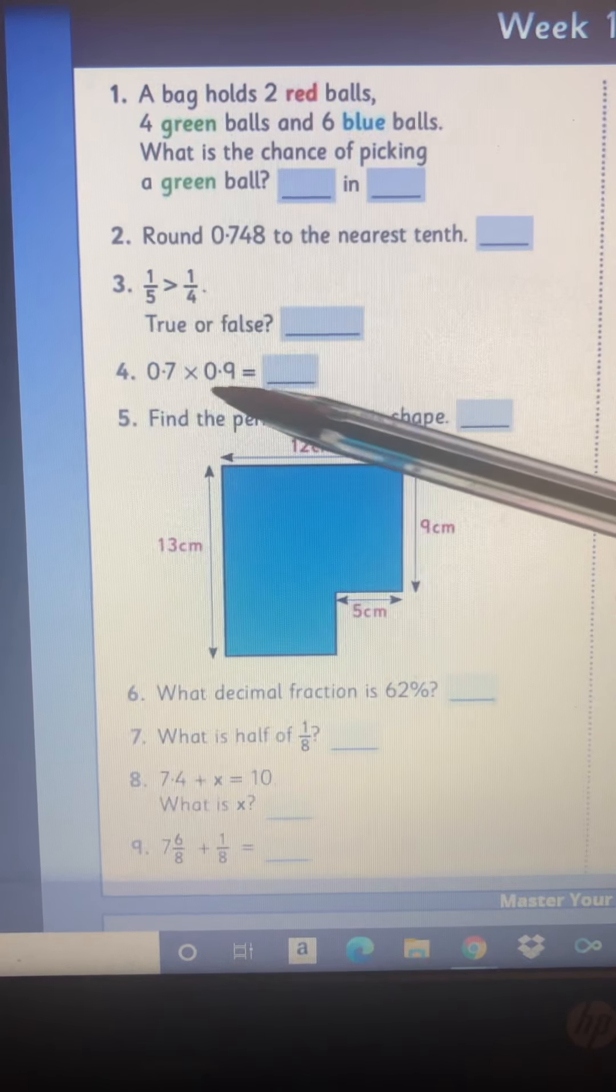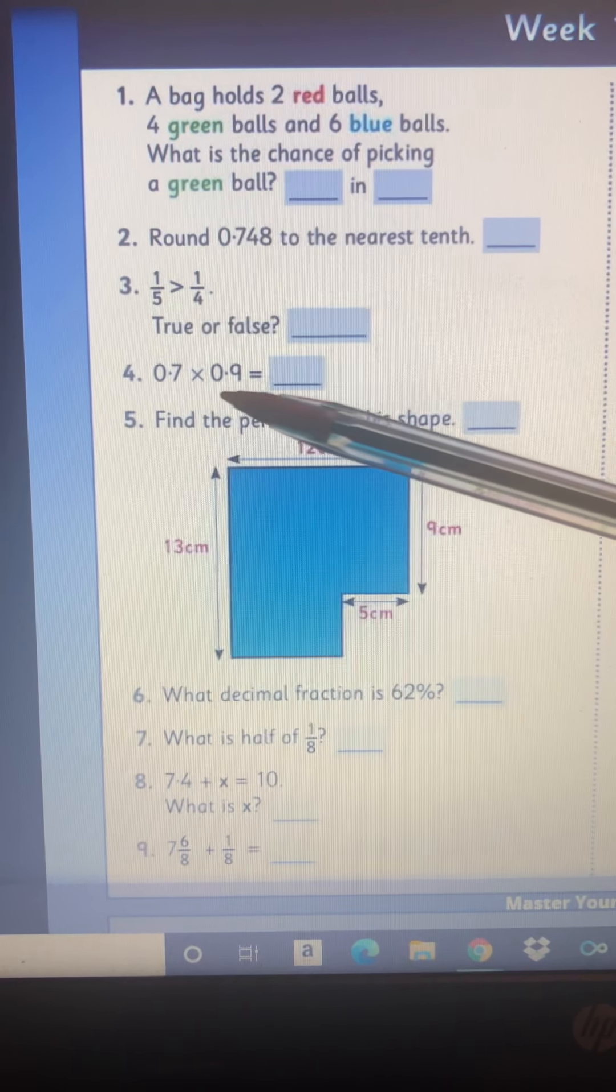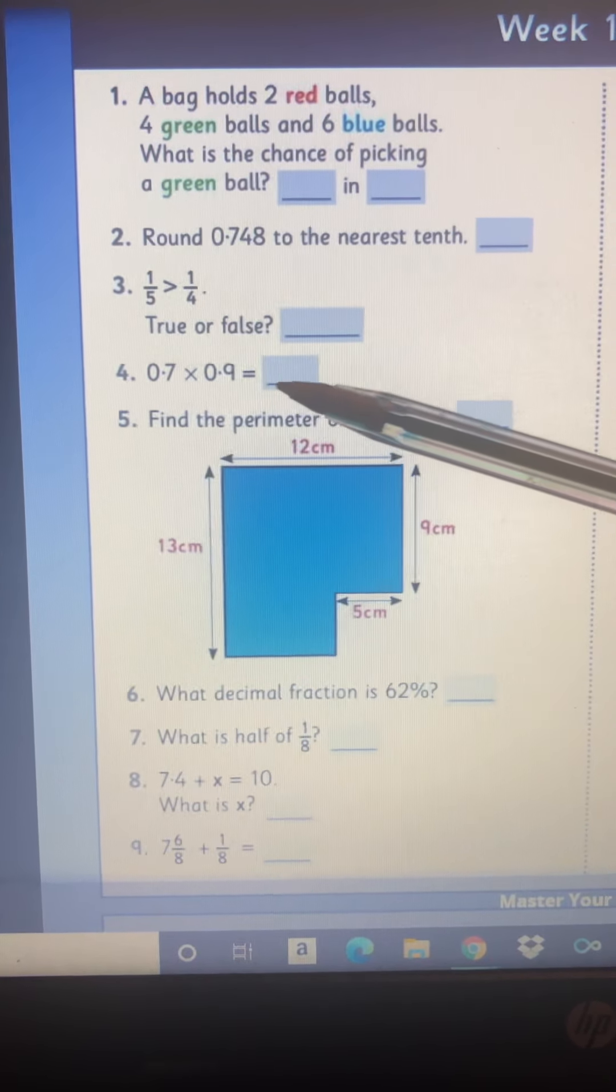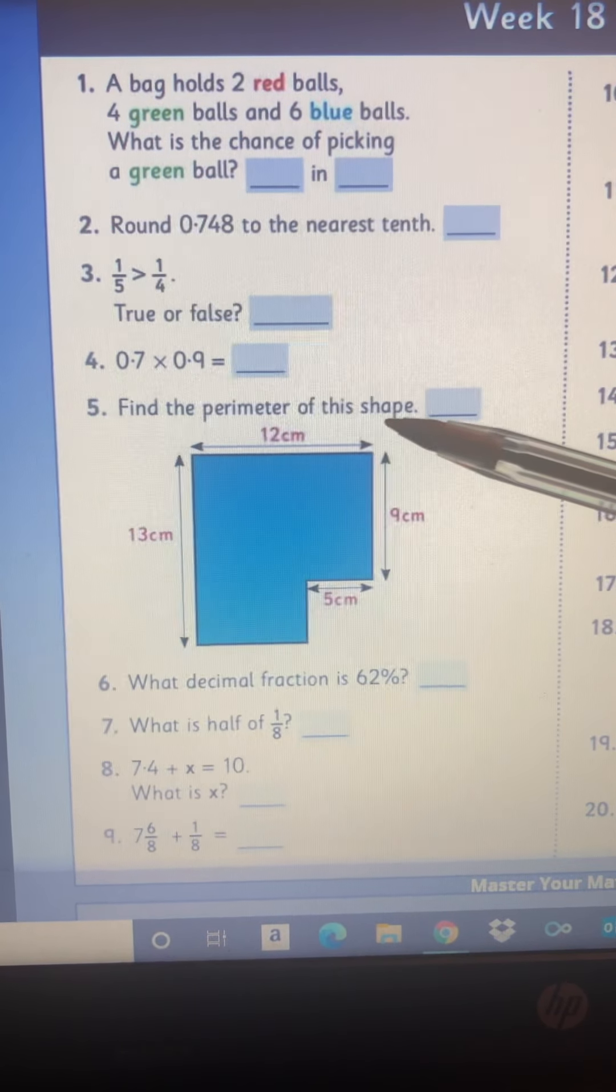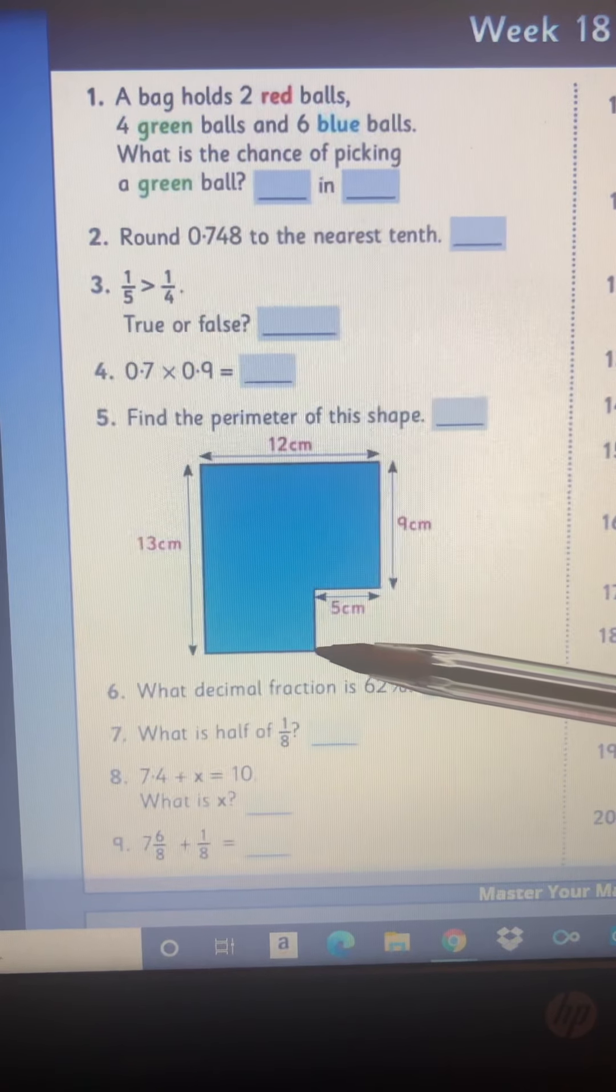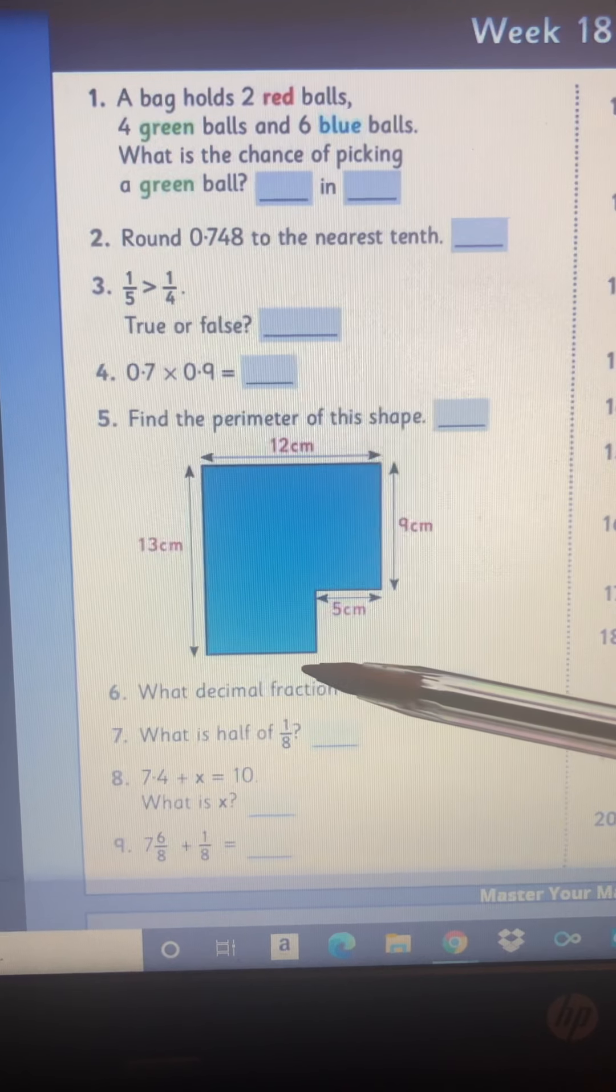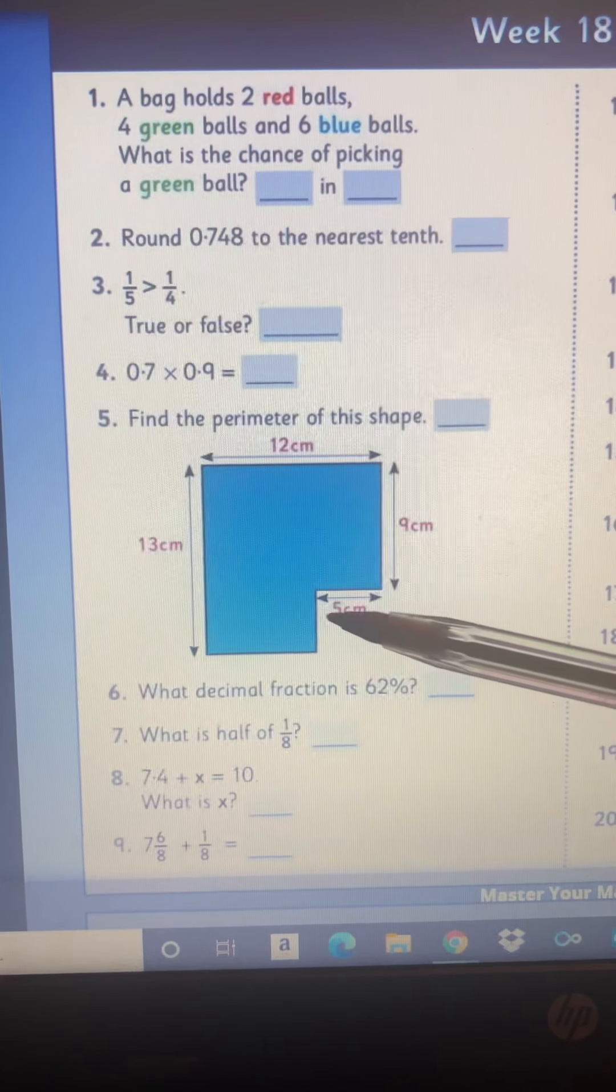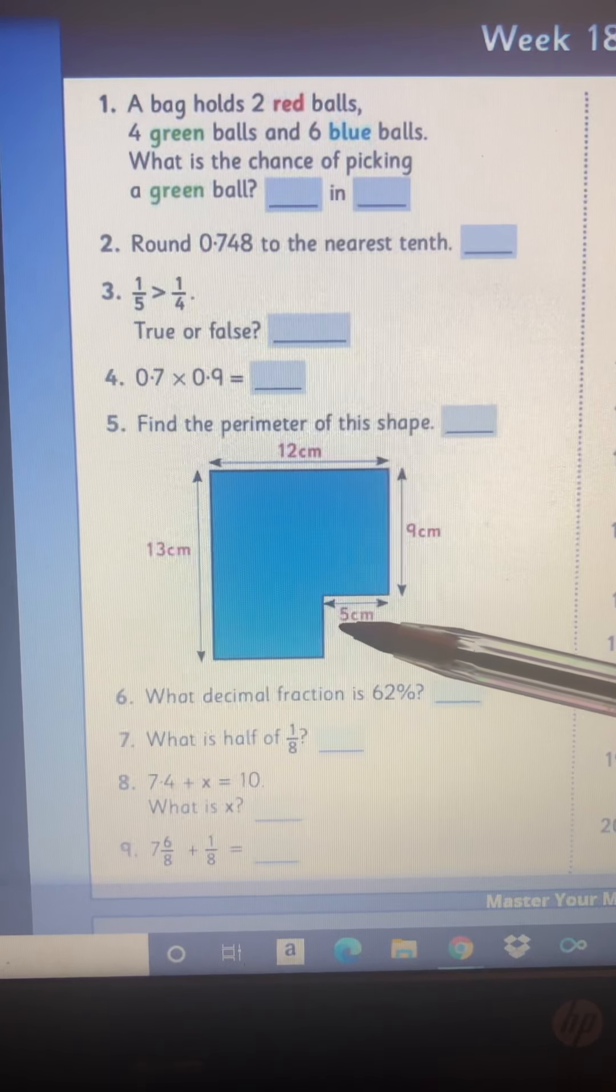Number four, same as yesterday again, 0.7 multiplied by 0.9. Just make sure you've two decimal places in your answer. Number five, find the perimeter of this shape. So the perimeter is as if you're putting up a fence all around. So you need all sides. So you need to find the length of this side and this side before you can add all of the sides together.